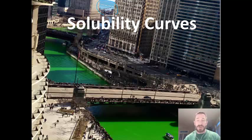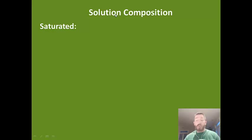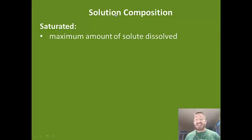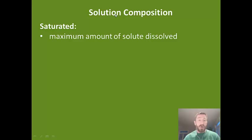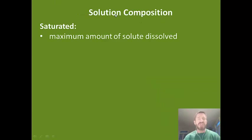We're going to learn a few terms that go along with solubility, in addition to learning about the curve itself. First, let's look at some terms related to solution composition. One of those is saturated. Saturated means the solution has a maximum amount of solute dissolved at that specific temperature. If you add more solute and it settles to the bottom after thorough mixing, that means the solution was saturated — it can't hold any more at that temperature.